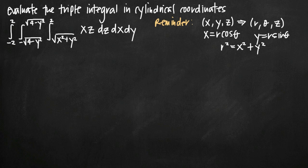Today we're going to be talking about how to evaluate a triple integral in cylindrical coordinates. But before we can evaluate it in cylindrical coordinates, we need to convert it. In this particular problem, we've been given the triple integral with various limits of integration of the function x times z. The order of integration is dz, dx, dy.